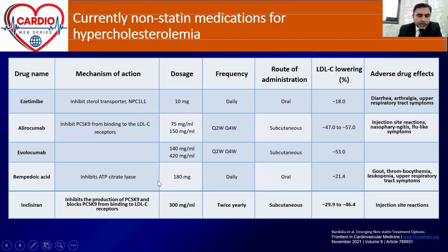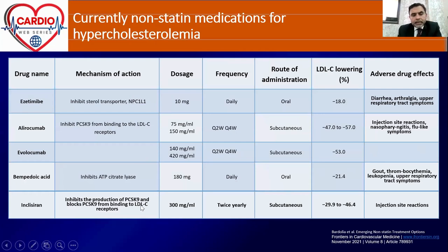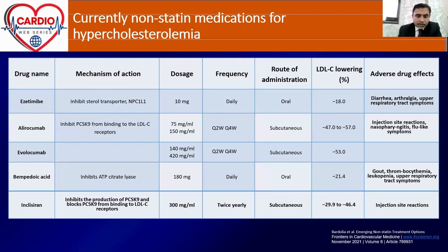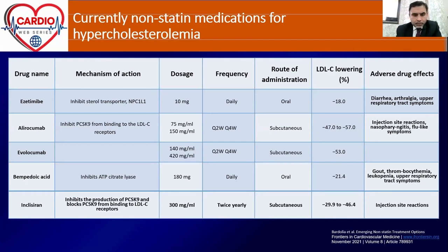Inclisiran is unique in that it inhibits the production of PCSK9 rather than inhibiting PCSK9 itself. Beautifully, it is given only twice yearly, with results showing 30–46% LDL reduction. FDA approved it within the past 6–12 months; I've heard some patients are already getting it from Dubai, and another pharmaceutical company is reportedly launching it here — very exciting times. Bile acid sequestrants such as colesevelam are another option, again not available in Pakistan, but an additional agent that could be used.